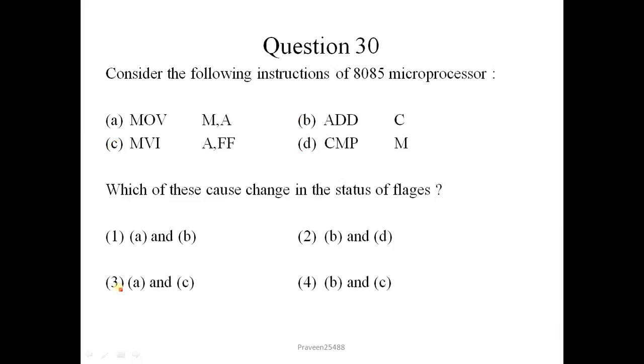Next question is, consider the following instructions of 8085 microprocessor: MOV M comma A, ADD C, MVI A comma FF, CMP M. Which of these cause change in the status of flags? MOV M comma A - the function of this instruction is that the contents of accumulator, 8 bit register, moves to the memory register which is of 8 bit. This is data transfer instruction in which the flag status does not alter or change. So this is not the answer. Next is ADD C. The operation of this instruction is that the contents of C register is added with the contents of accumulator. There may be chances of changing the flag status. This will be the correct instruction.